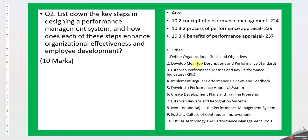I've tried to list other points: define organizational goals and objectives, develop clear job descriptions and performance standards, establish performance matrices and key performance indicators, implement regular performance reviews and feedback, develop a performance appraisal system, create development plans and training programs, establish a reward and recognition system, monitor and adjust the performance management system, foster a culture of continuous improvement, and utilize technology and performance management tools. These are not exhaustive — I've just listed some points.